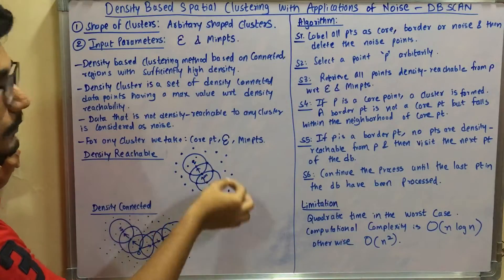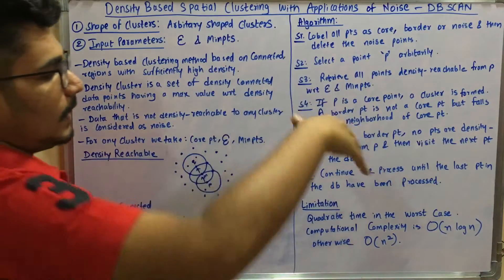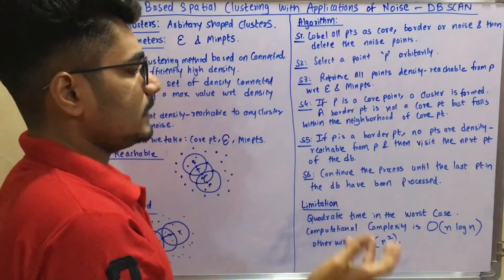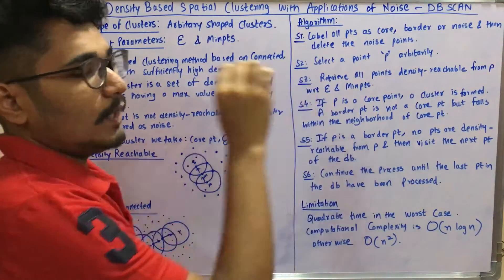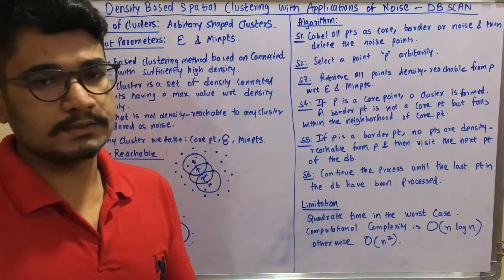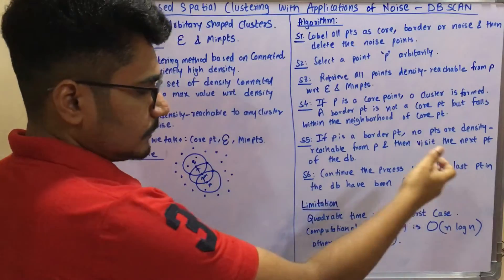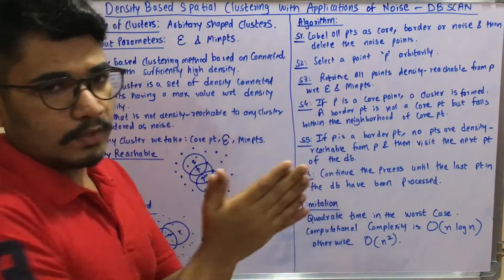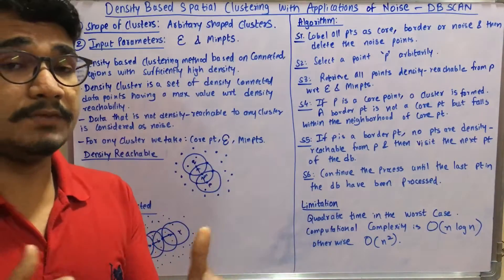A border point is not a core point but falls within the neighborhood of a core point — for example, p or q may be border points around core point m. If p is a border point, no points are density reachable from p, and the algorithm visits the next point in the database. Only if a point is a core point is it considered a cluster; it must also be density reachable from other points. This process continues until all points in the database have been traversed.